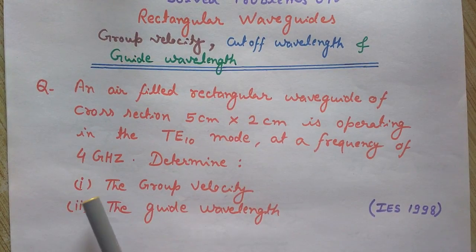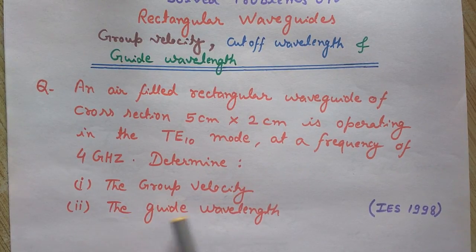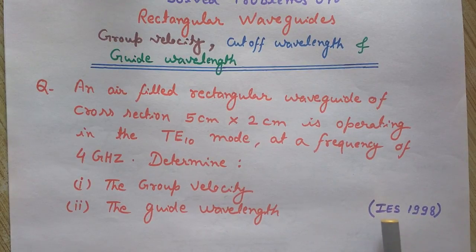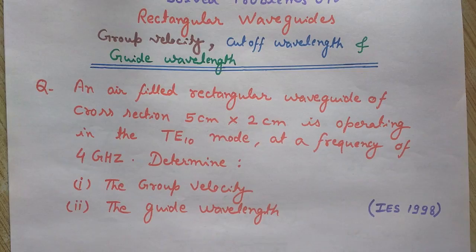So I want to calculate first the group velocity and the second is the guide wavelength. This question was asked in the Indian Engineering Services 1998, IES 1998.